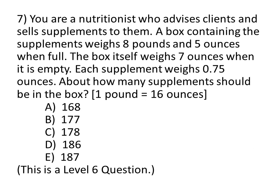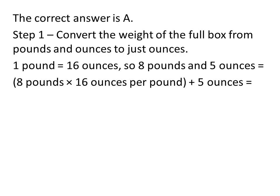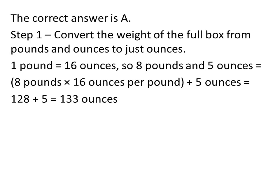Here is question 7. The correct answer is A. For step 1, convert the weight of the full box from pounds and ounces to just ounces. We know from the formula provided that 1 pound is equal to 16 ounces. So, 8 pounds and 5 ounces is equal to 8 pounds times 16 ounces per pound plus the 5 ounces that we have left over. When we multiply 8 by 16, we get 128 ounces plus the 5 ounces is equal to 133 ounces altogether for the weight of the full box.